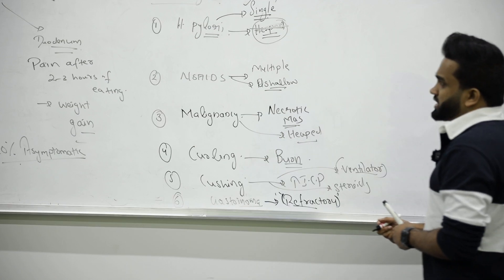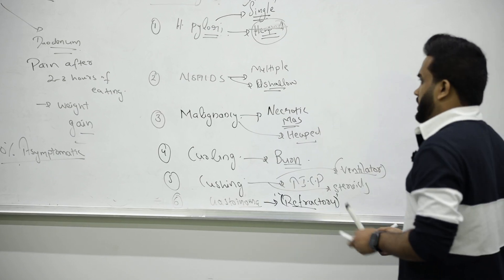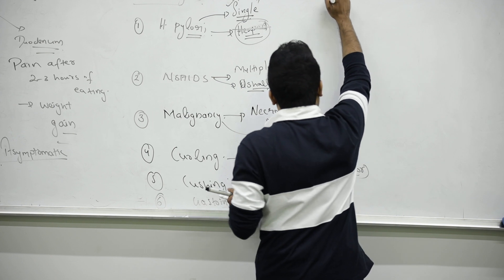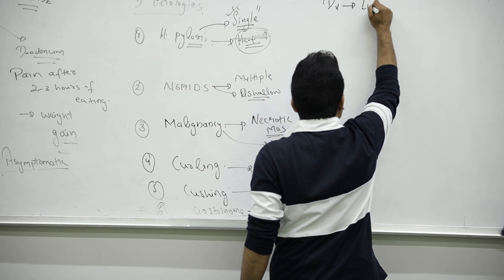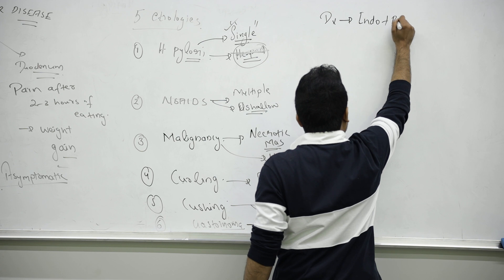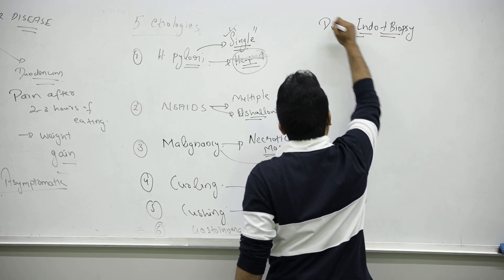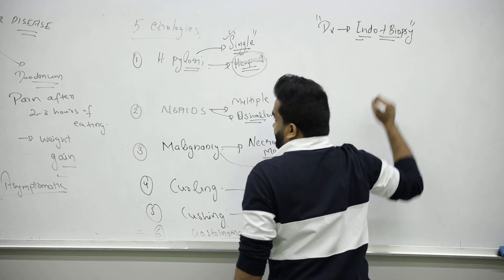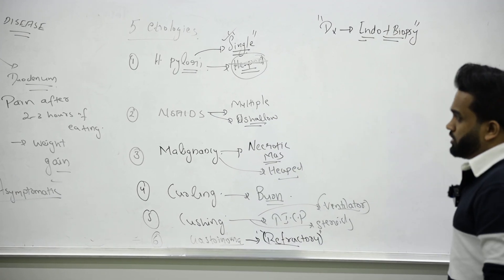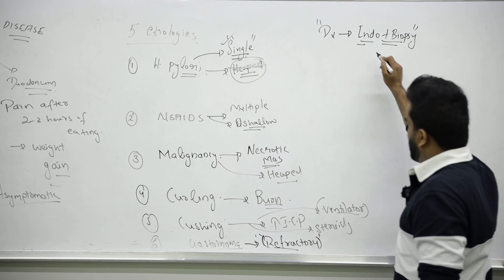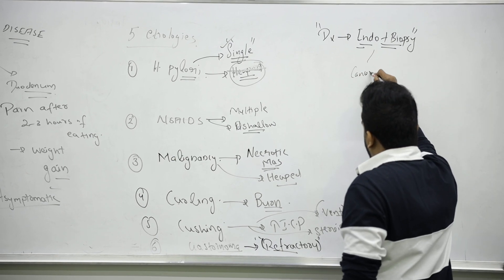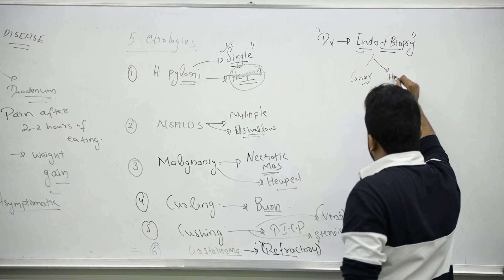These are the five common etiologies of ulcer. Every time for diagnosing, the best one is endoscopy and biopsy. We will be diagnosing by endoscopy and biopsy to rule out cancer or to rule out Helicobacter pylori.